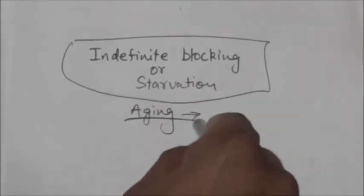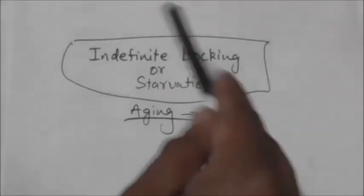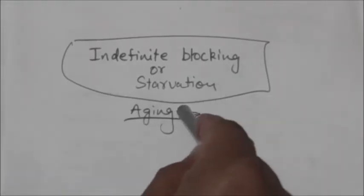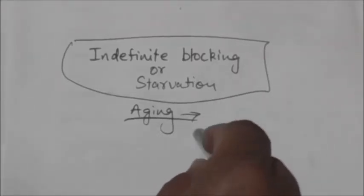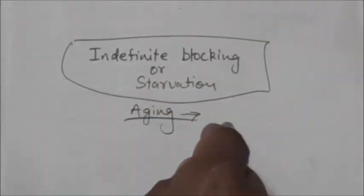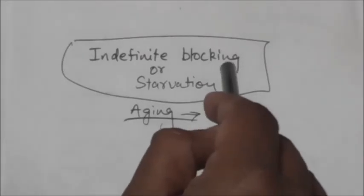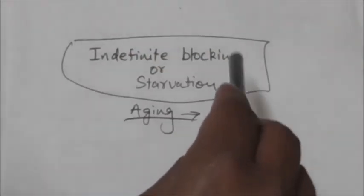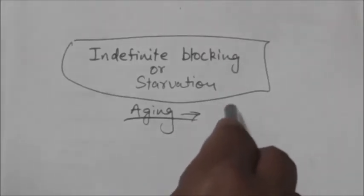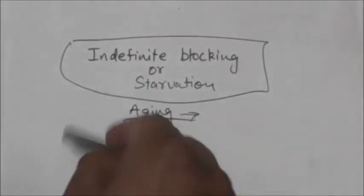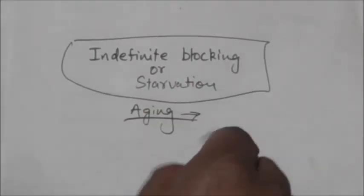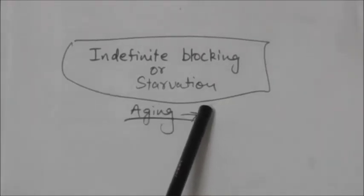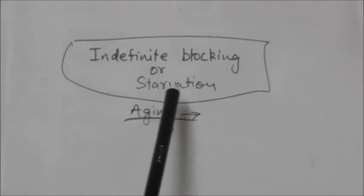The solution to starvation is aging. Aging is a technique where the priority of a waiting process is gradually increased after a fixed amount of time — for example, after every 15 minutes the priority is increased by 1. Eventually the waiting process reaches the highest priority and gets allocated the CPU. This technique of gradually increasing the priority of a long-waiting process is called aging.